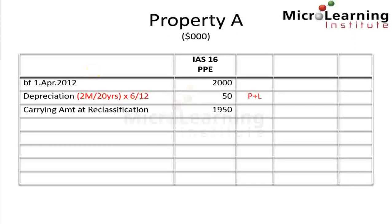Consequently, on the 1st of October 2012, the carrying amount of property A prior to reclassification was $1.95 million. This amount would have appeared on the statement of financial position of Speculate.